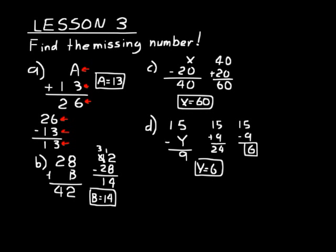Be careful on those subtraction problems. When you have numbers lined up vertically in a subtraction problem, the bottom number is always the smaller one. So when the missing number is the smaller number, you subtract the difference from the other given number — like we subtracted 9 from 15 and got 6. If the unknown number is the larger number, like X, you add the difference to the other number they gave you: 40 plus 20 is 60. Be careful on those subtraction problems when finding the missing number.